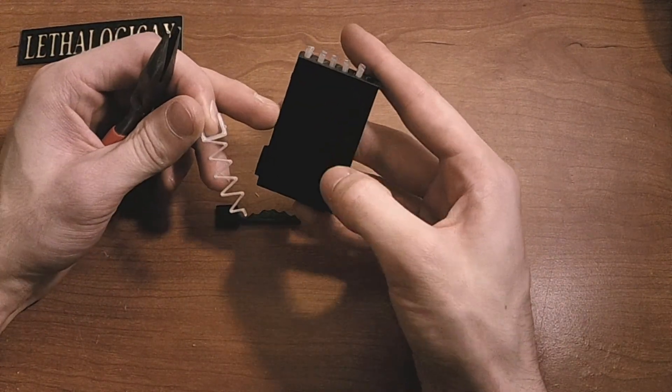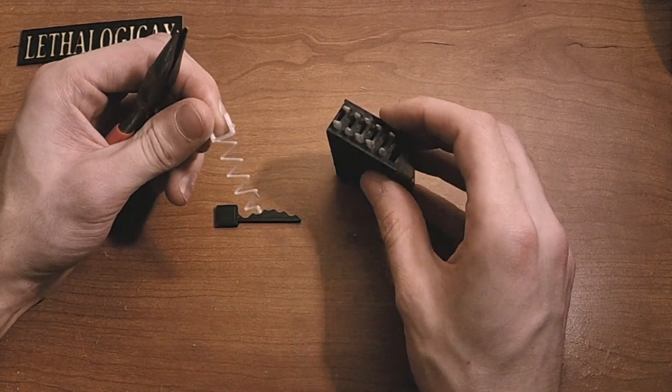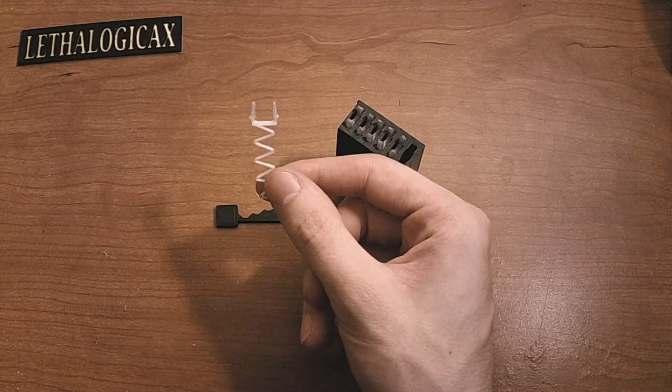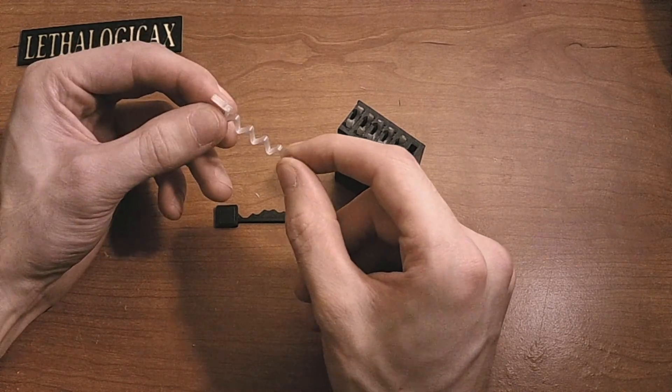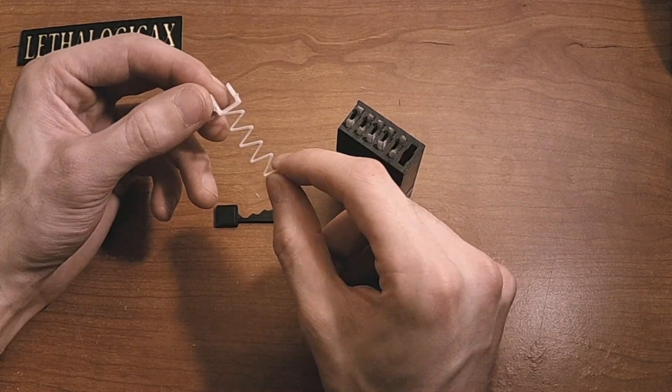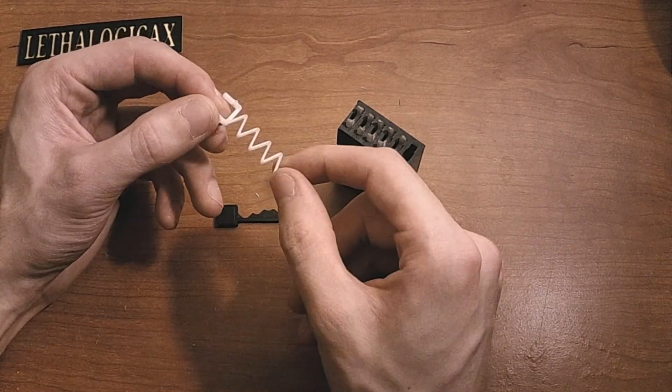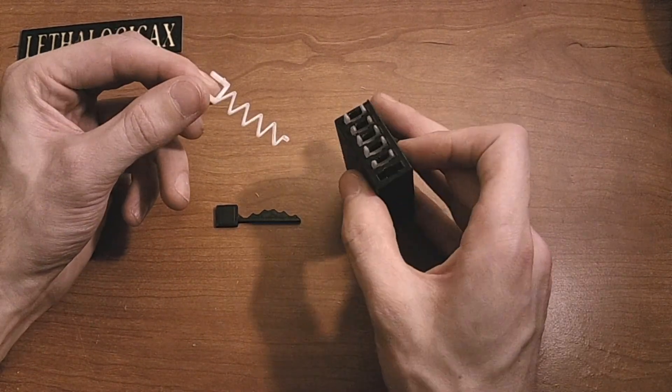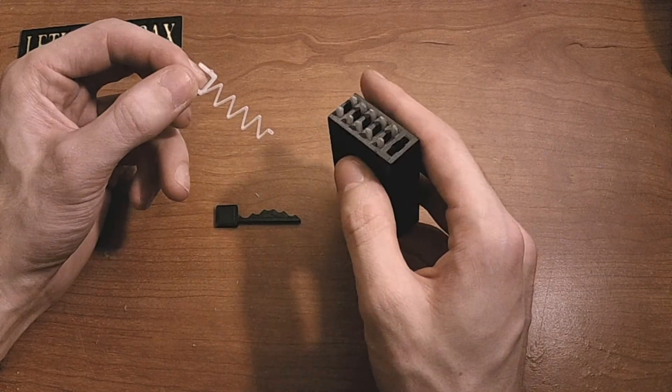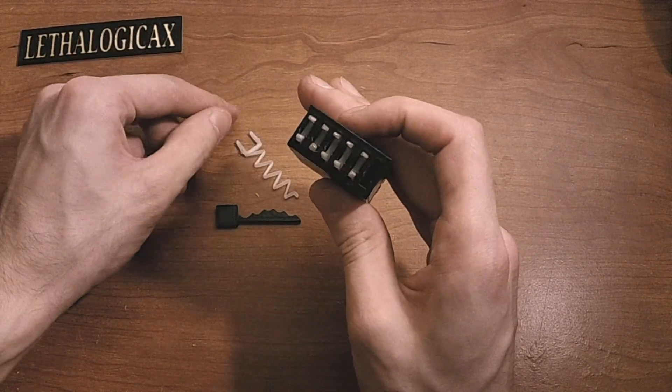The body of the lock was printed out of PLA but I found PLA does not make for very good springs. These ones had to be, this particular spring was printed in PETG which is a lot springier and has a little bit more memory to it than PLA which kind of just bends and stays bent.